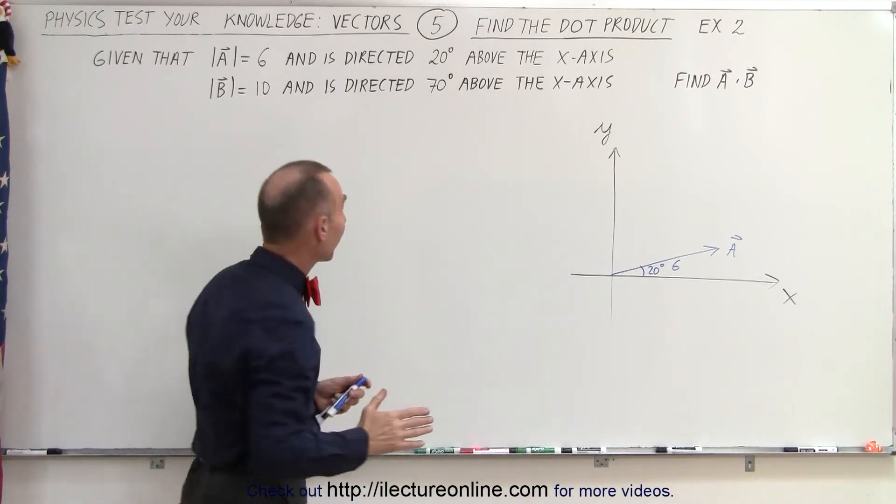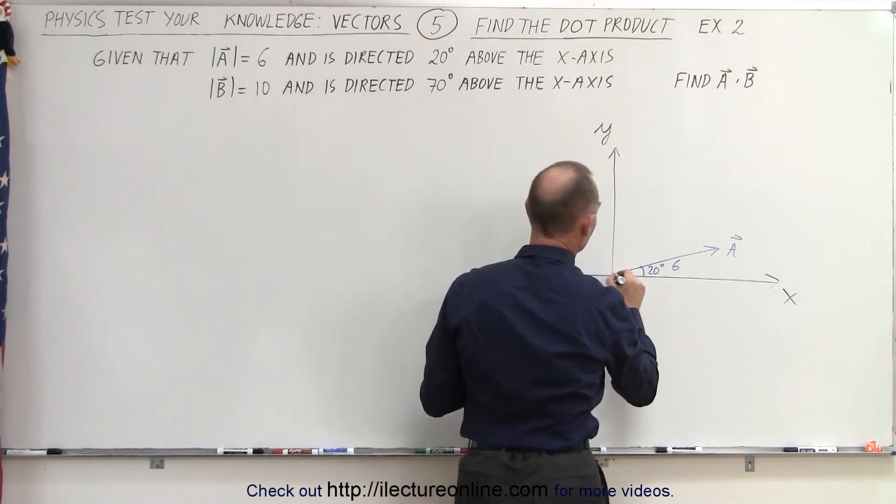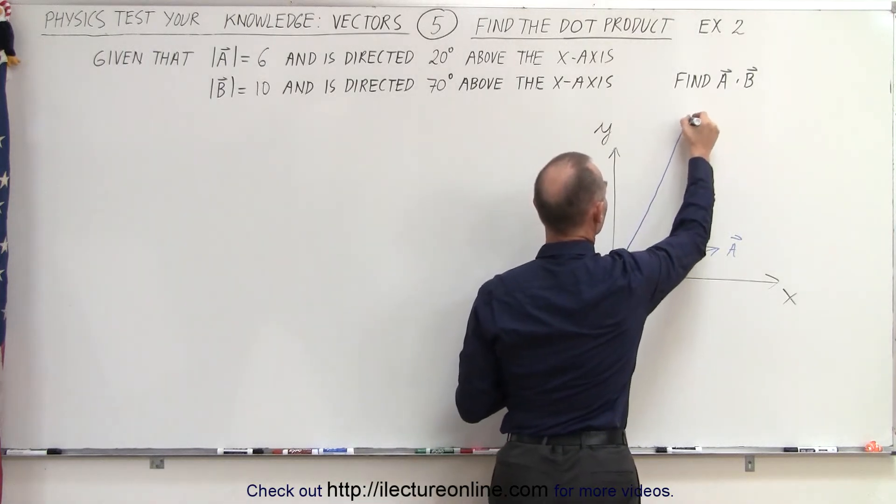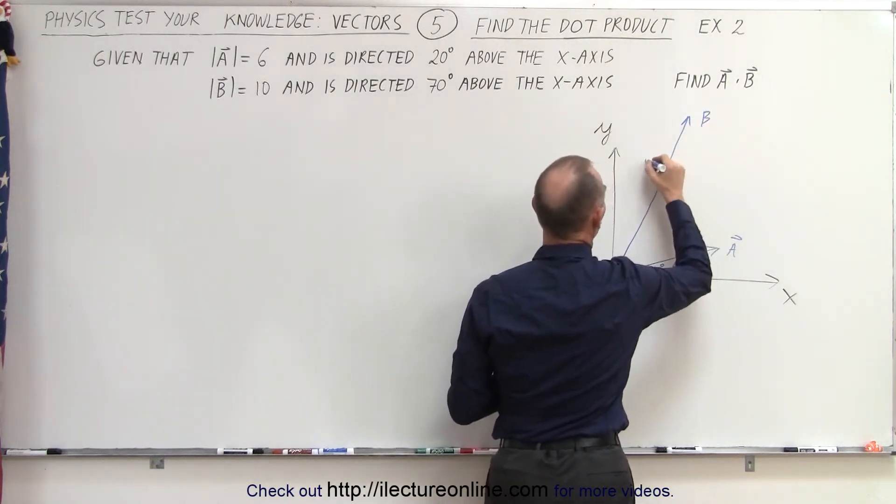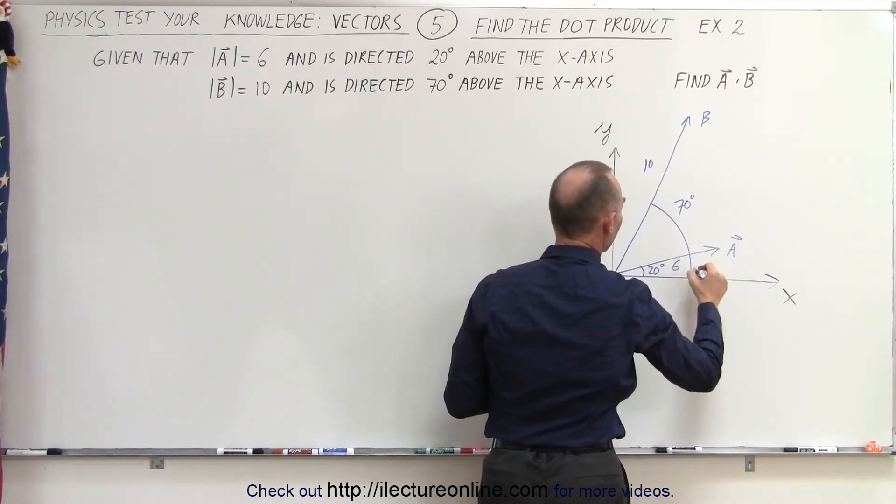Now let's draw our B vector. It has a longer magnitude and it's at a much higher angle, so here would be our B vector. It has a magnitude of 10 and an angle of 70 degrees relative to the x-axis.